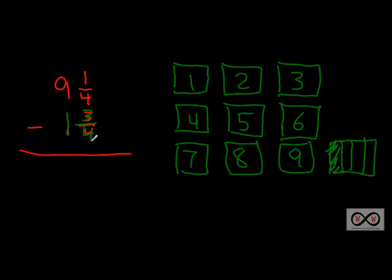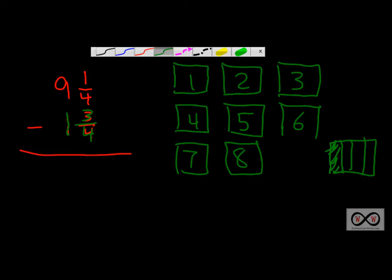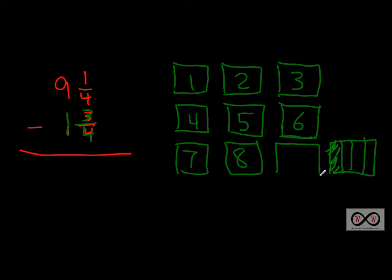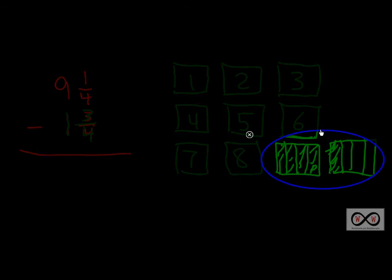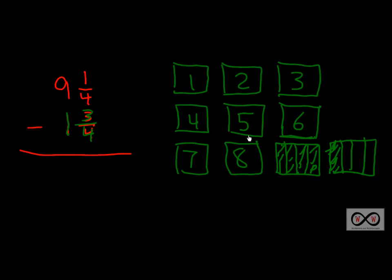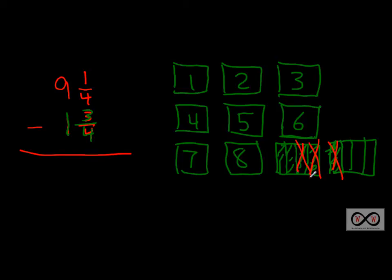We have to subtract one and three-fourths from that. The problem is we can't take three-fourths away from one-fourth. So what we do is take that ninth gallon and break it up into fourths. We now have the same total amount — just broken differently. Four-fourths represents that ninth gallon. Looking at those two pieces together — the four-fourths and the original one-fourth — we have one, two, three, four, five: five-fourths total. With five-fourths we can certainly take away three-fourths.